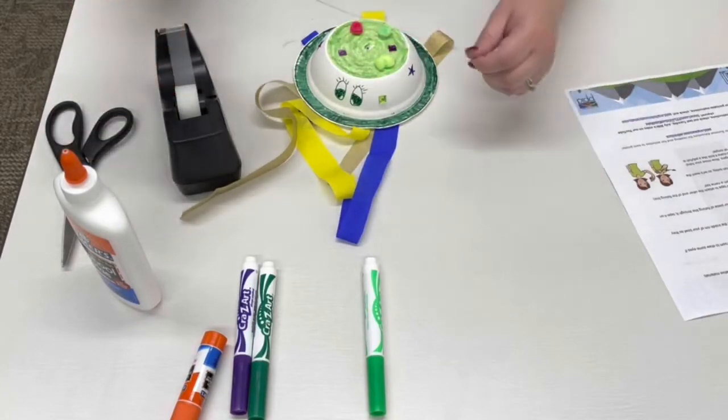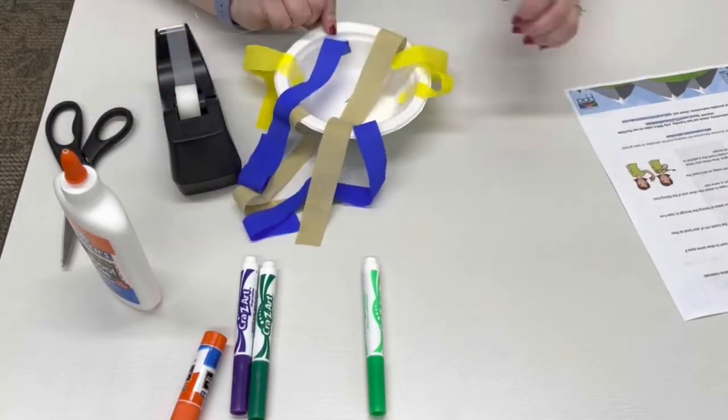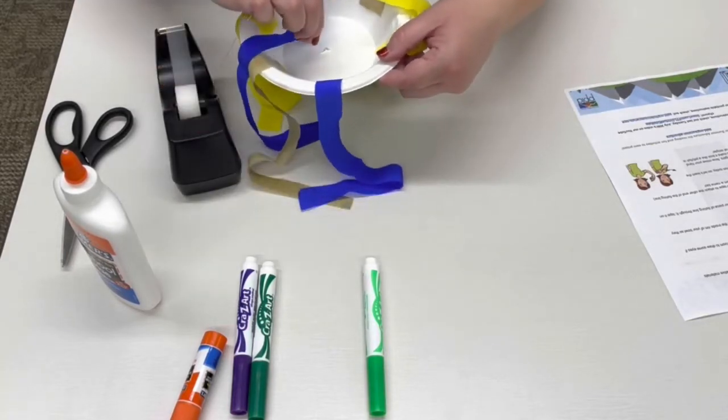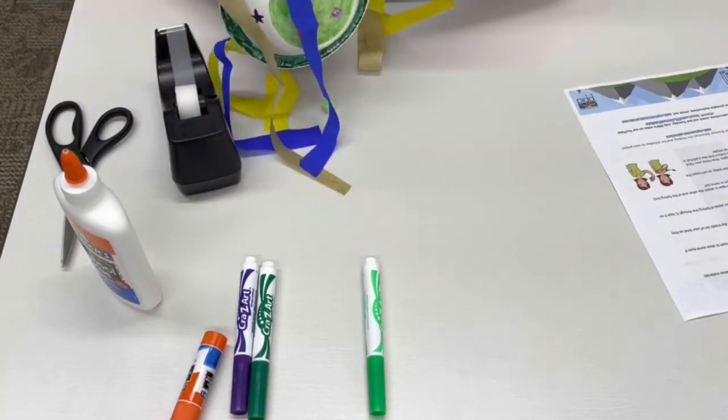The last step is to attach your piece of fishing line to your jellyfish. You will want to string the piece of fishing line through the hole that you made earlier.